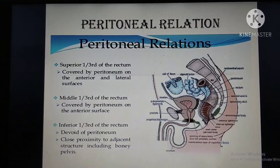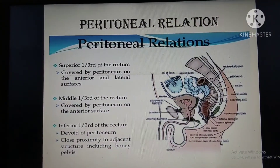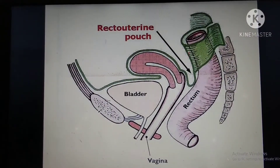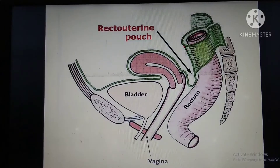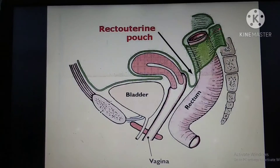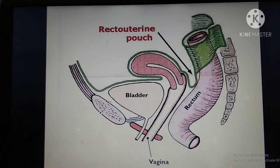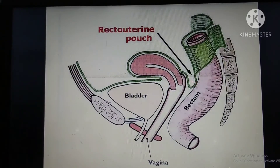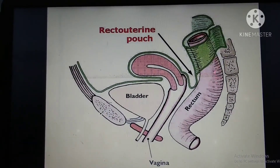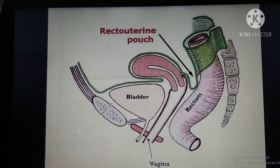For peritoneal relations, the rectum is divided into three parts. The superior one-third is covered anteriorly and laterally by peritoneum. The middle one-third is covered only anteriorly by peritoneum with no lateral covering. The lower one-third is devoid of peritoneum.